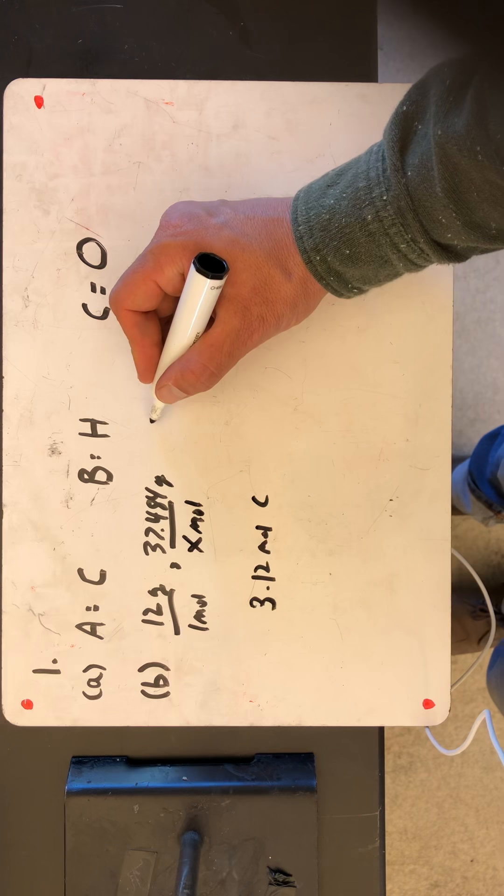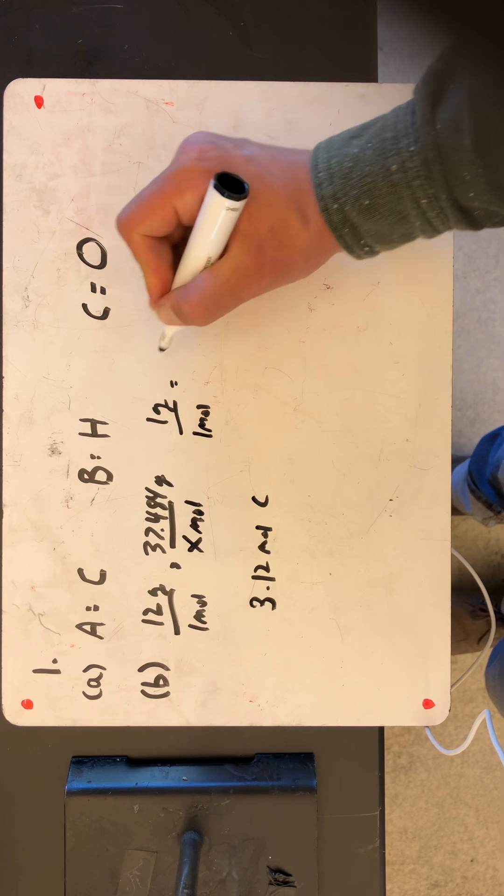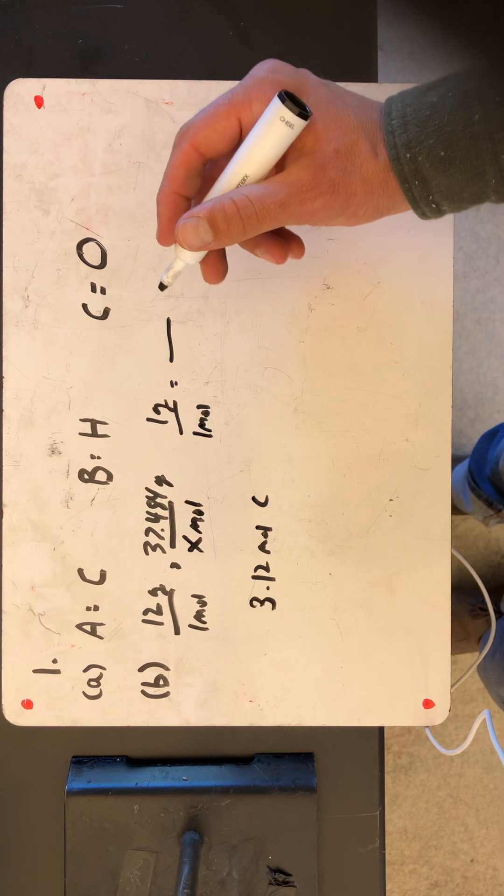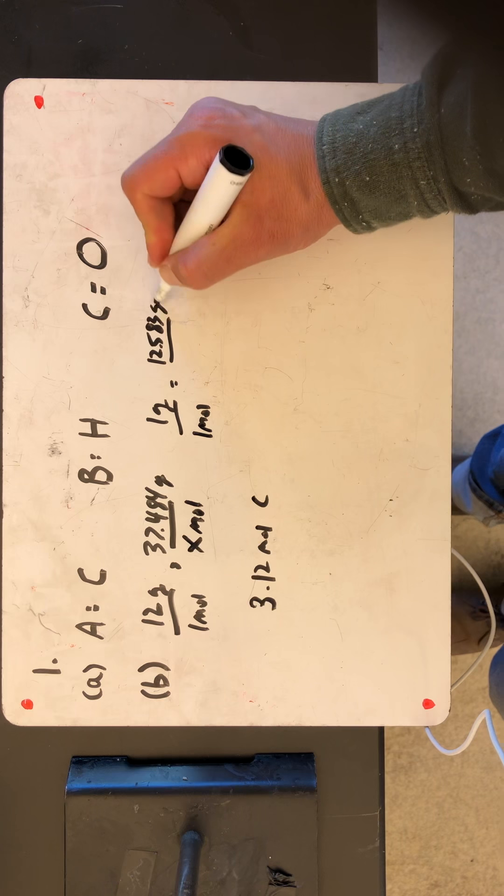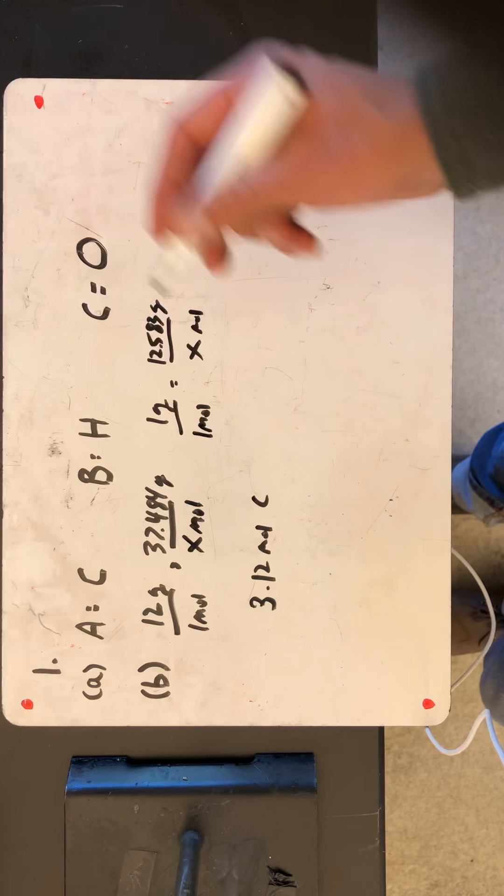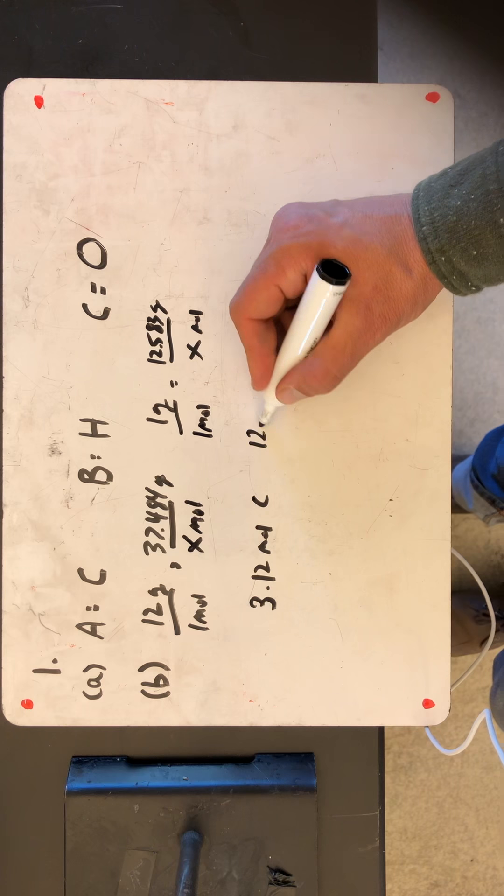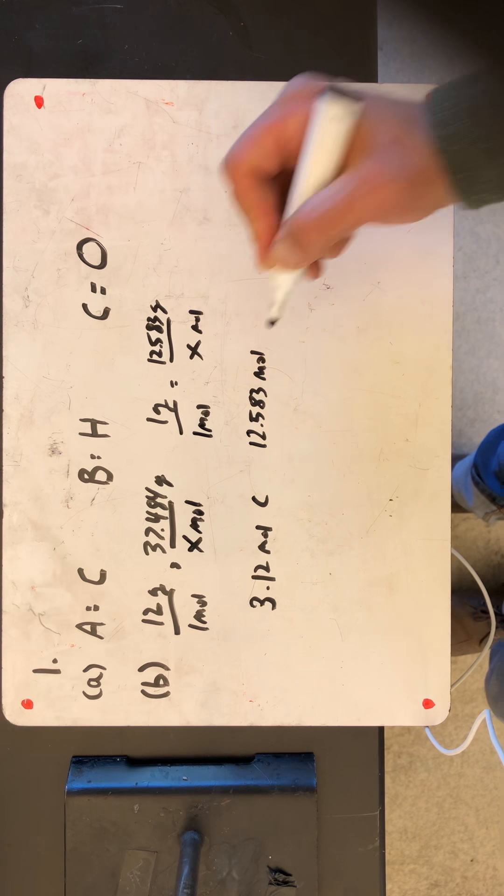Now I'm gonna do the same thing for hydrogen. We know that hydrogen's molar mass is one gram per every one mole. And in this case, I have 12.583 grams per every x moles. And in this case, we can look at it just logically and know that that's gonna be 12.583 moles.